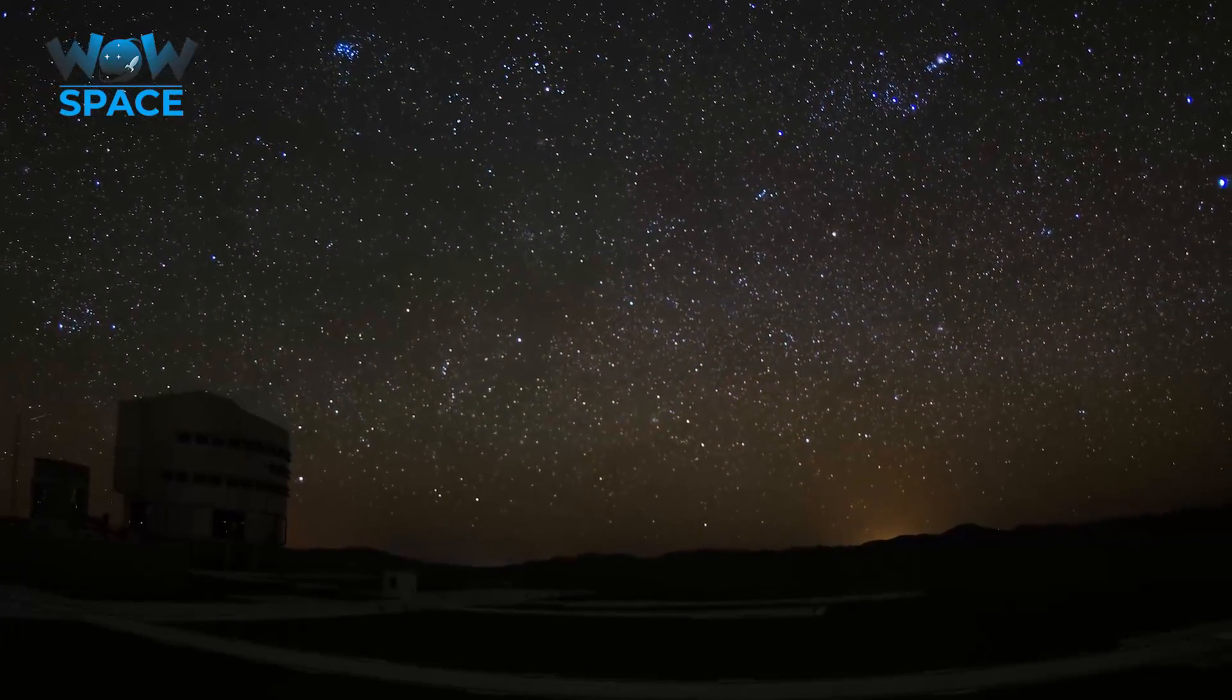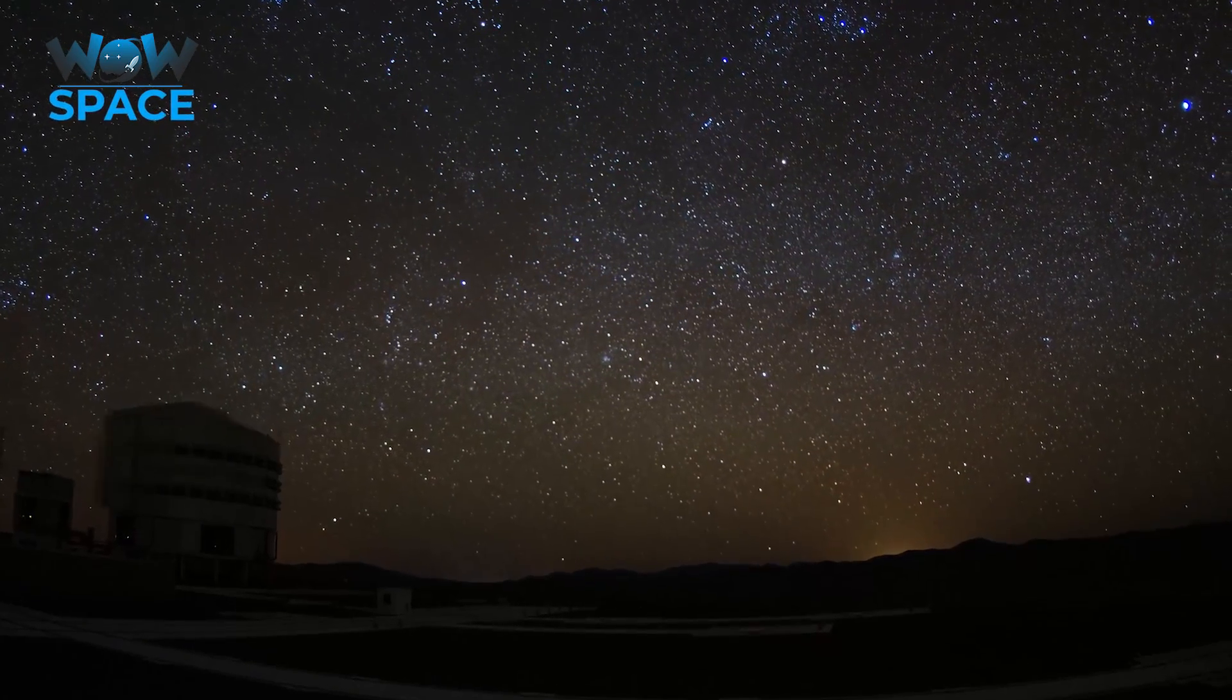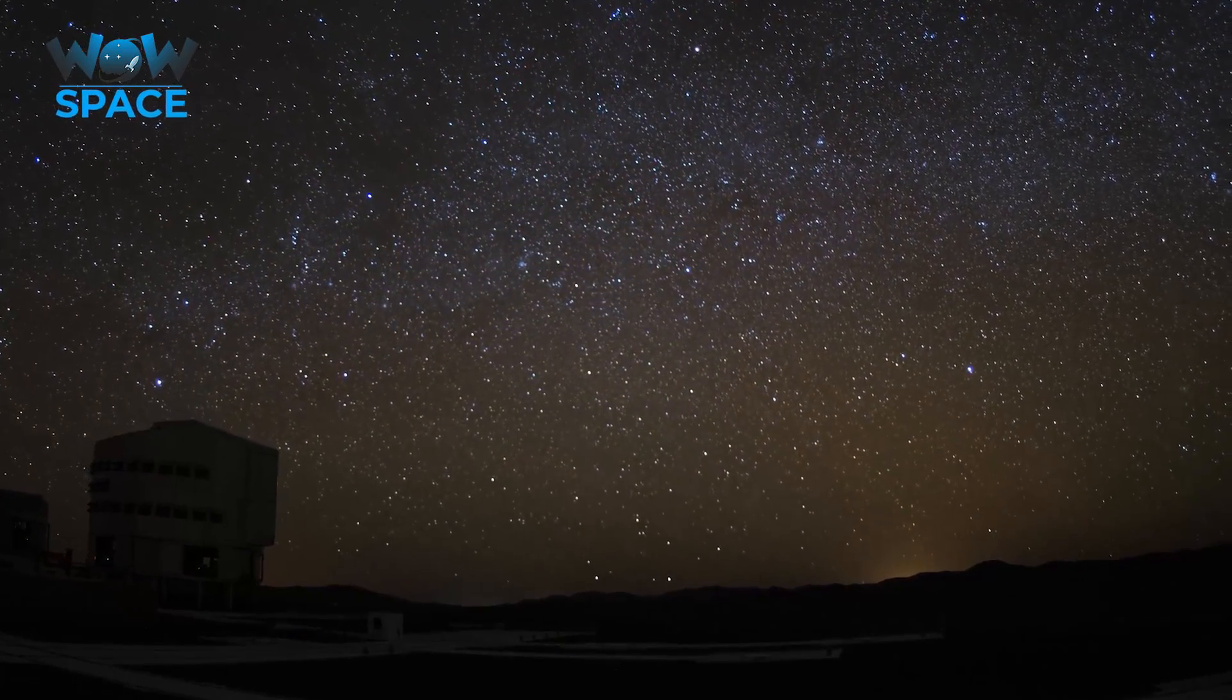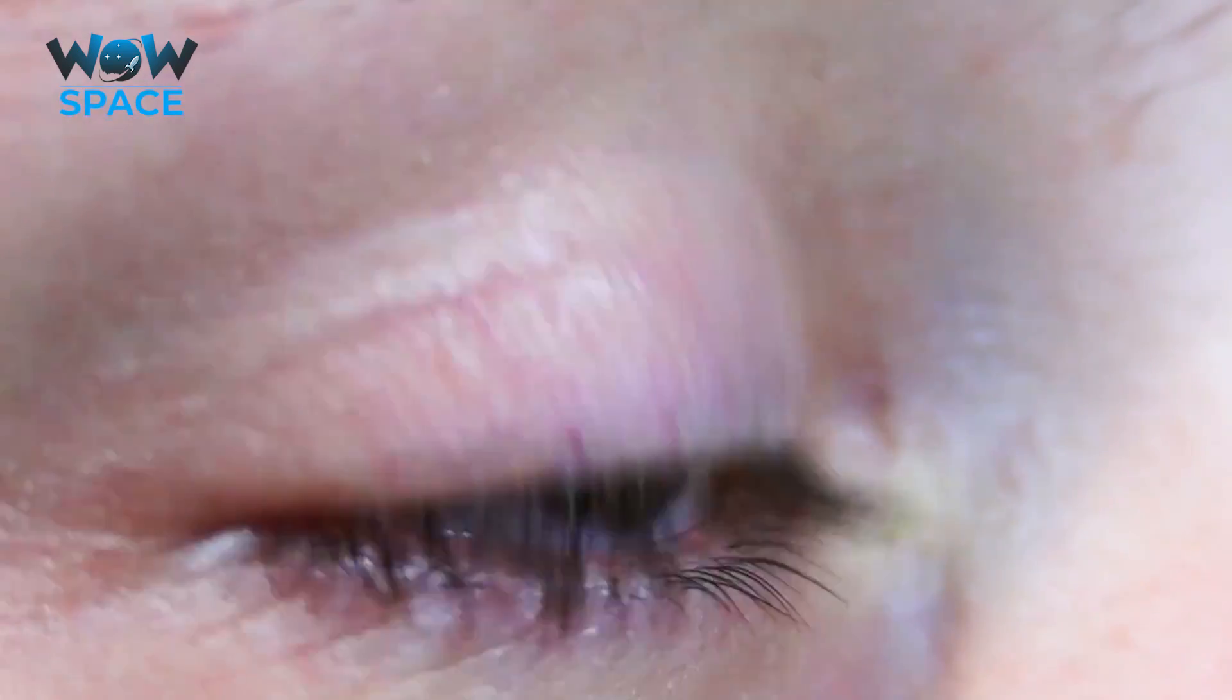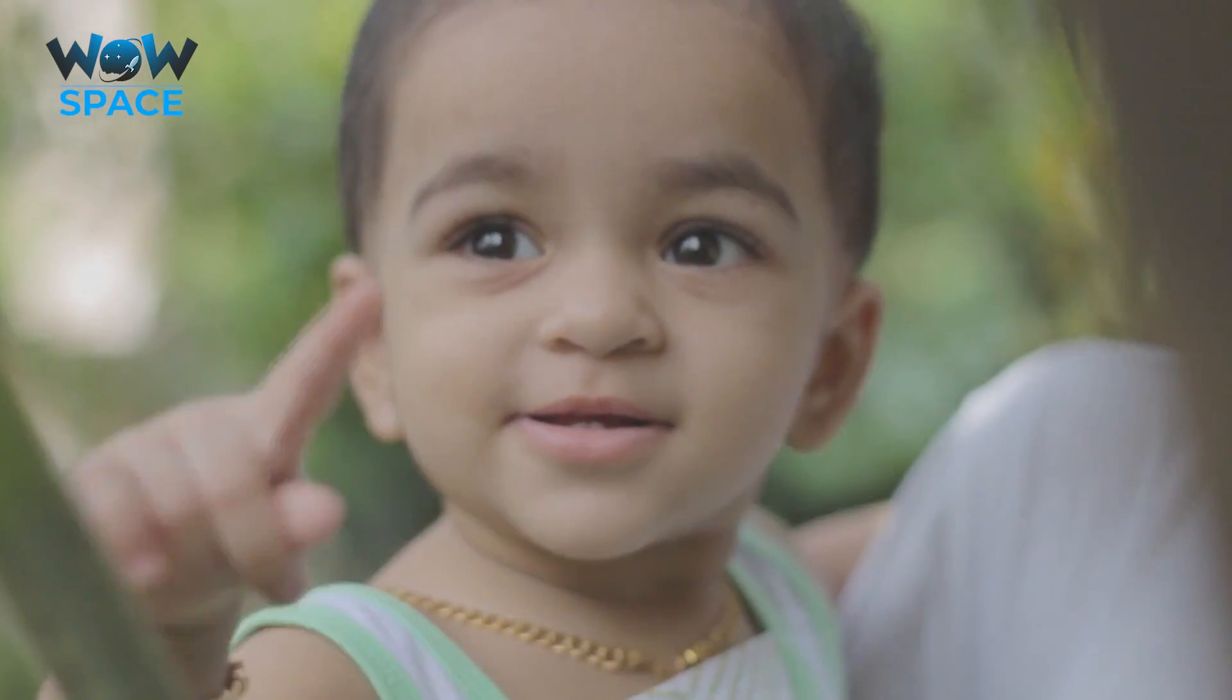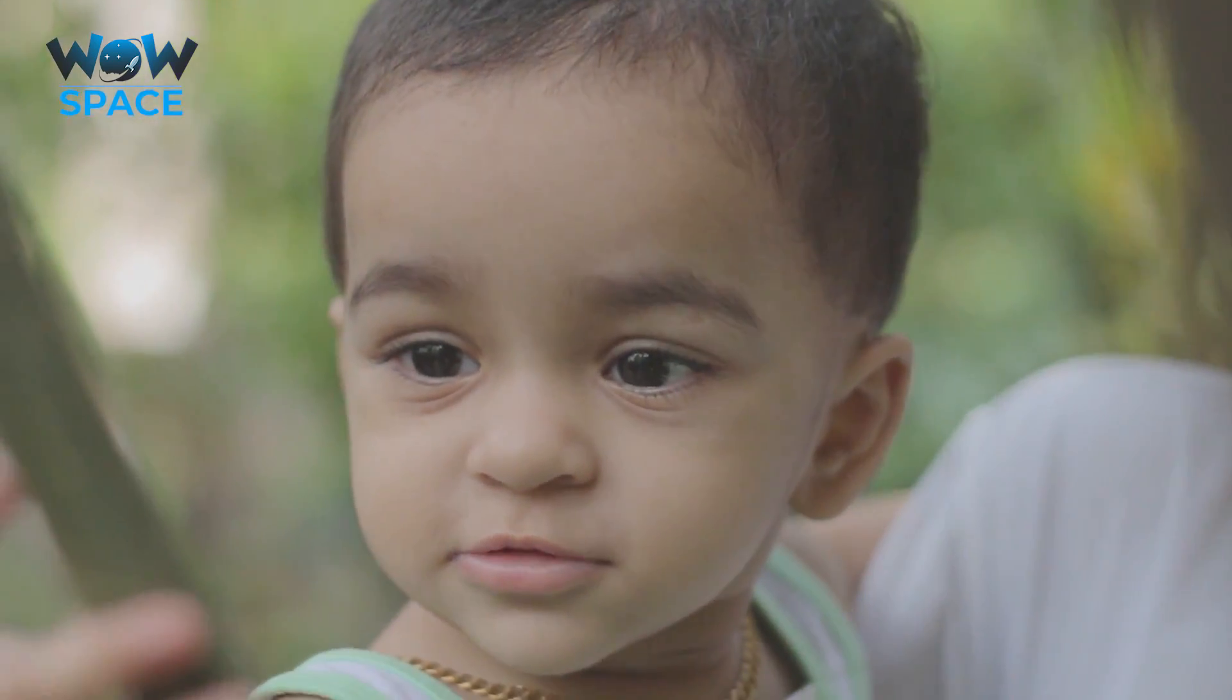Which leads nicely onto the second point about why the night sky is black, and it's to do with your eyes. Human eyes are well adapted to life on Earth. During the day anyway, we can see what we need to just fine.